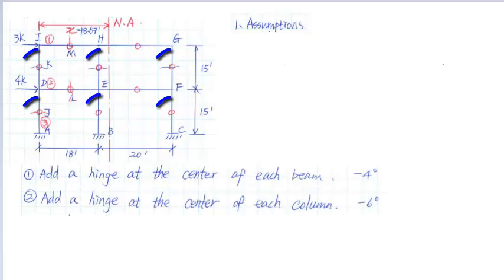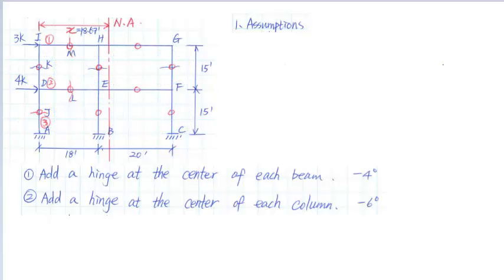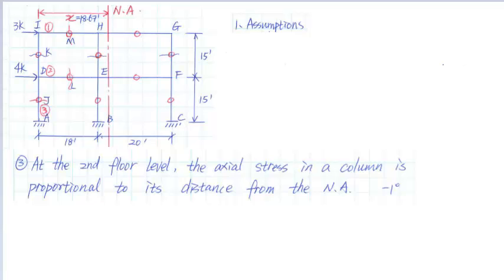Second, we will add a hinge at the center of each column, and this will reduce 6 degrees of indeterminacy. Then, we assume that at the second floor level, the axial stress in a column is proportional to its distance from the neutral axis. This assumption provides one additional equation, which reduces 1 degree of indeterminacy.